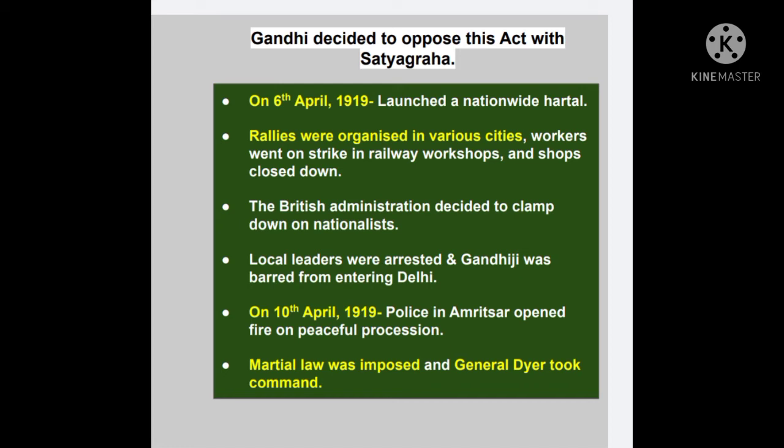Is andolan mein, jo hamare krantikari the, unhone lines of communication — railways aur telegraph — ko disrupt kiya. The British administration decided to clamp down on the nationalists. Local leaders were picked up from Amritsar, and even Mahatma Gandhi was banned from entering Delhi.